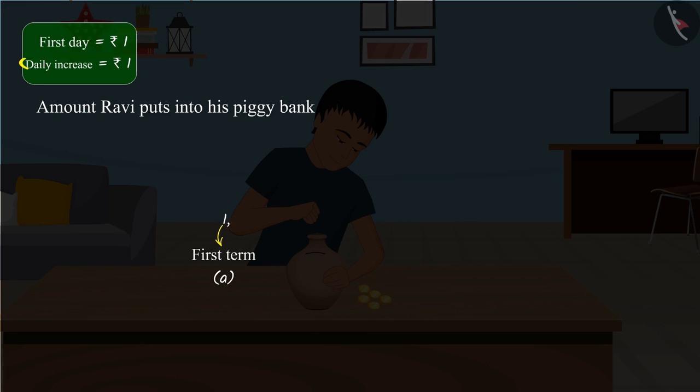Because Ravi increases the amount by 1 rupee per day, he will put 1 plus 1 equal to 2 rupees in the piggy bank the next day. Going forward in the same manner, we will get an arithmetic progression, which represents the money Ravi puts into his piggy bank every day.